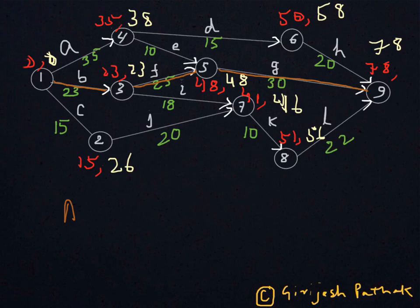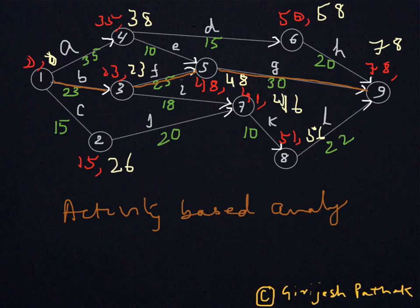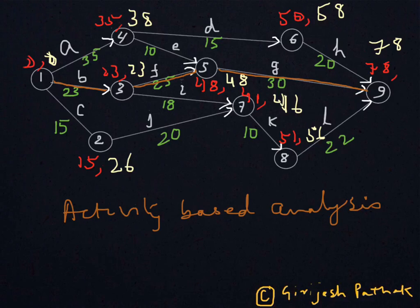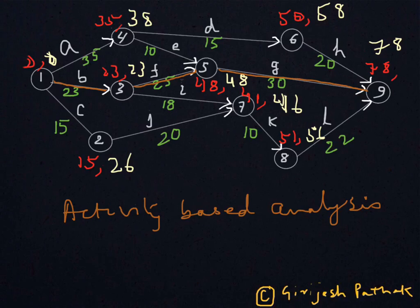In this video we will be doing activity-based analysis. It is better if you watch the earlier video on event-based analysis before watching this, because we are going to use the data on all these nodes. We have already found the earliest time and latest time, and you have this activity-on-arrow network diagram with activity symbols written over the arrows and activity times written below — for example, G takes 30 days and H takes 20 days.